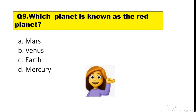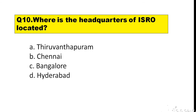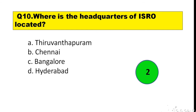Question number 10. Where is the headquarters of ISRO located? Options are: A. Thiruvananthapuram, B. Chennai, C. Bangalore, D. Hyderabad. The right answer is option C — Bangalore.